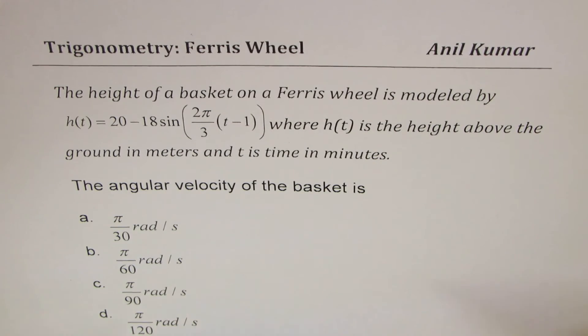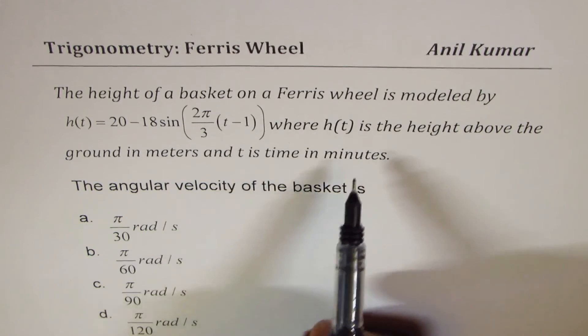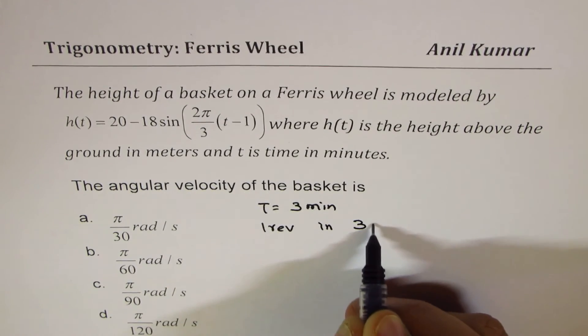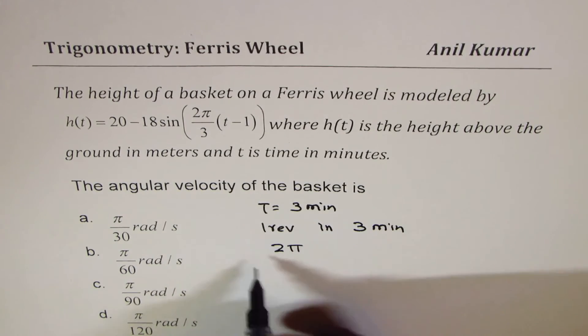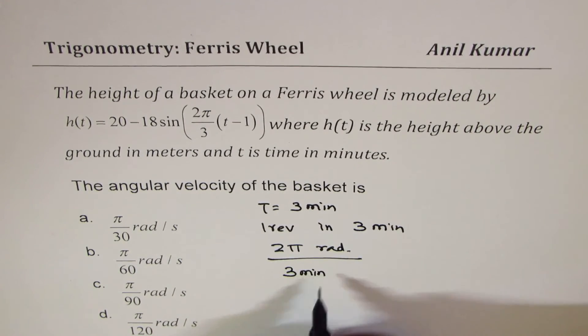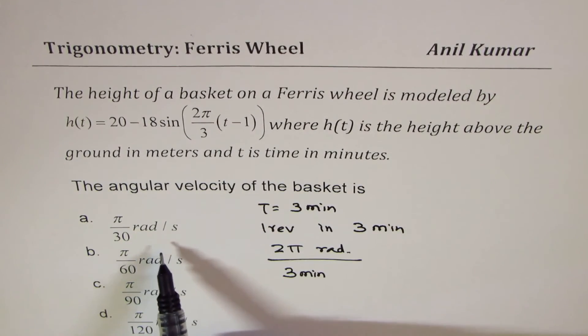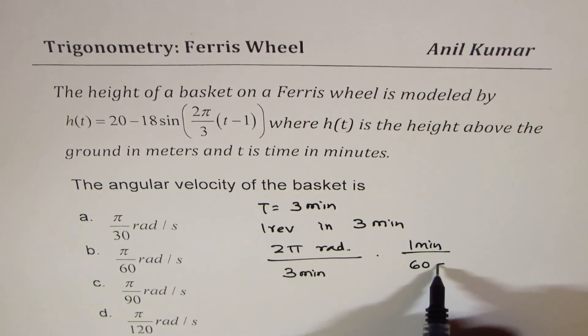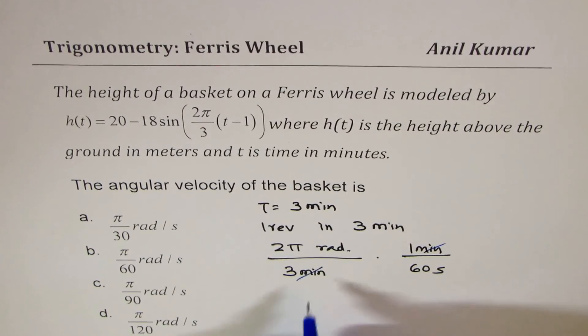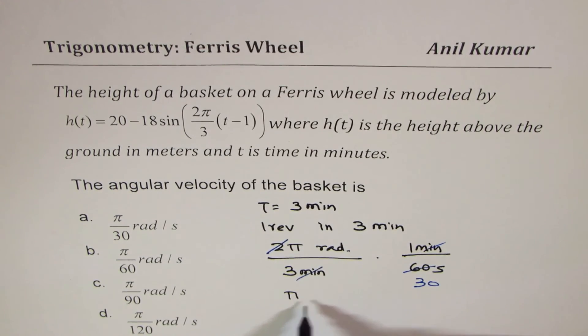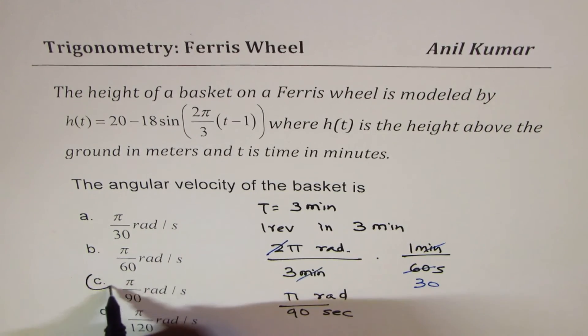The last question here is, the angular velocity of the basket is how much? Now, what we have realized is time t is 3 minutes. That means 1 revolution in 3 minutes. 1 revolution is 2π radians, in time taken is 3 minutes. Now, whenever we're trying to say angular velocity, as you can see, the units are radians per second. So we don't want minutes here. So let's convert minute to seconds. So we have minute divided by 60 seconds. Here, minutes and minutes cancel. You can simplify this. That 2 goes 30 times. And so what we get here is π radians over 90 seconds. So π/90 radians per second is just the right choice.